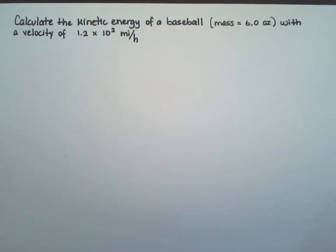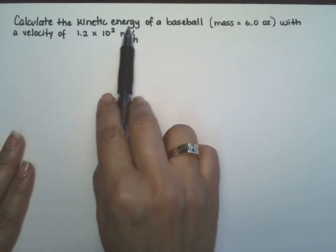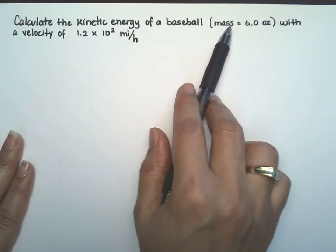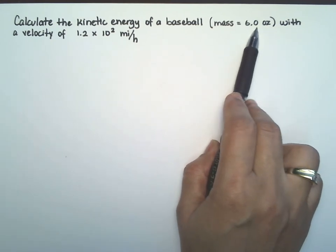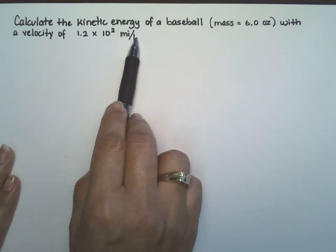Okay, let's do a fun one. It's short, but it's not that short. Okay, so calculate the kinetic energy of a baseball, and it has a mass of 6 ounces, and it has a velocity of 1.2 times 10 squared miles per hour.